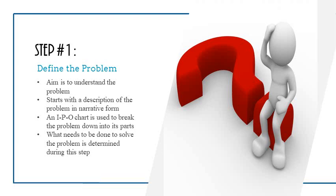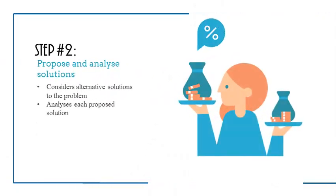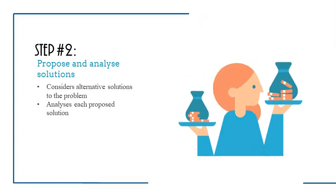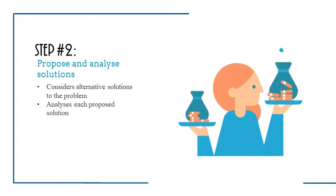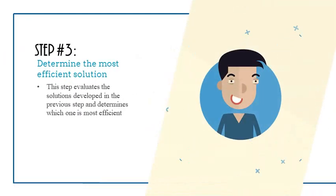Step two: propose and analyze solutions. Consider alternative solutions to the problem and analyze each proposed solution. For example, my problem is I am thirsty. Some solutions could be: I can drink milk, I can drink juice, I can drink tea, or I can drink water. Which one of these would be the best solution? That brings us to step three.